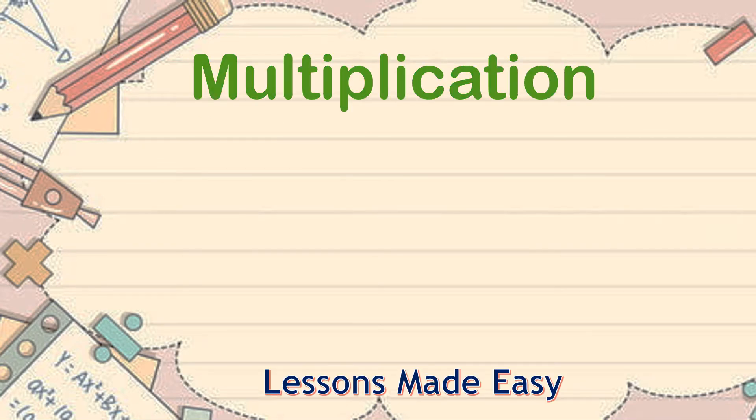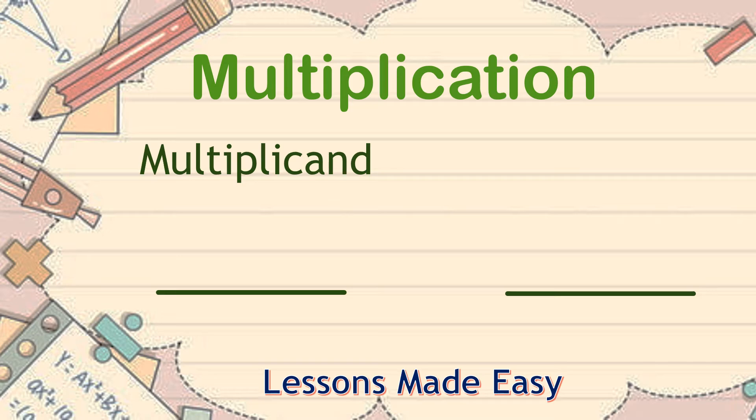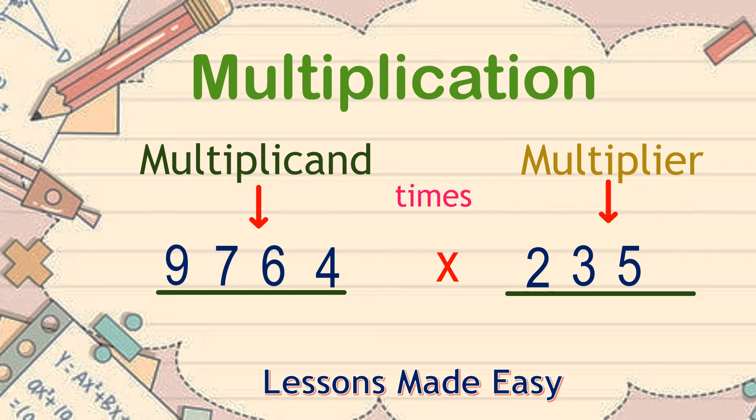Multiplication problem consists of two sets of numbers. The first set is called the multiplicand and the other the multiplier. To show that these numbers are to be multiplied, we use the times symbol represented by x. The multiplicand and the multiplier can be one digit, two digits, three digits, or even more.